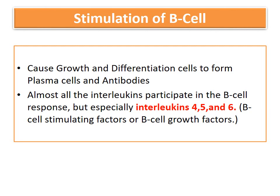The third and most important function of helper T cells is their role in humoral immunity. They cause the growth and differentiation of B cells, converting them into plasma cells, which in turn secrete antibodies. Almost all interleukins secreted by helper T cells participate in activating the B cell, but especially interleukin 4, 5, and 6, which are known as B cell growth factors. Without helper T cell stimulation, formation of plasma cells and secretion of antibodies is very slight.